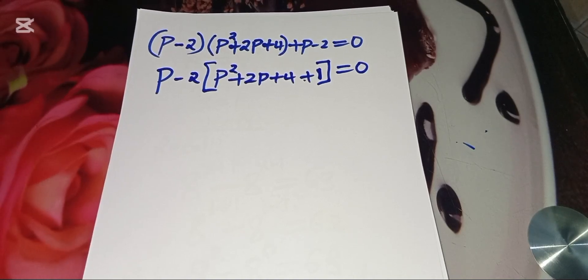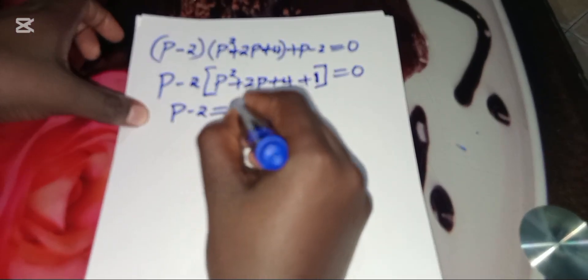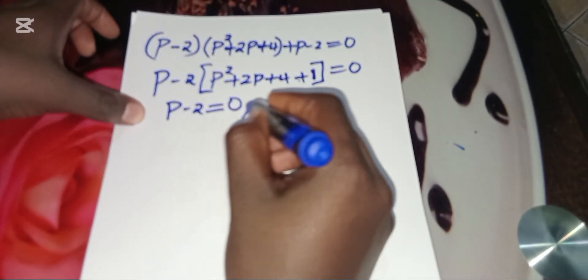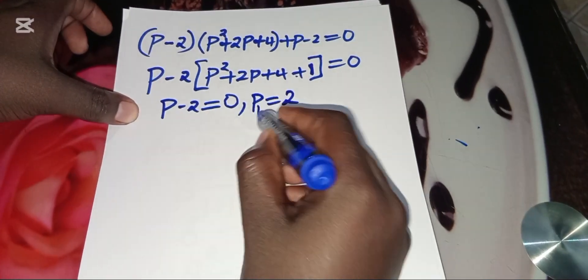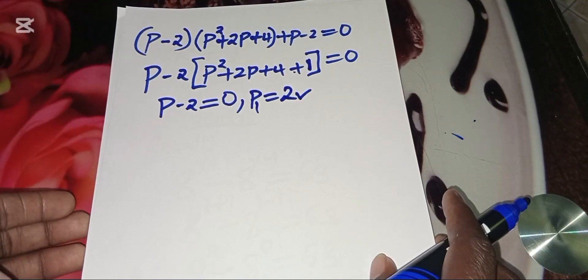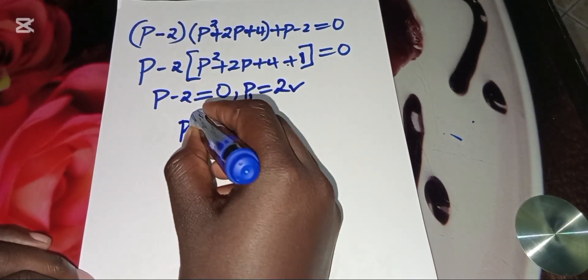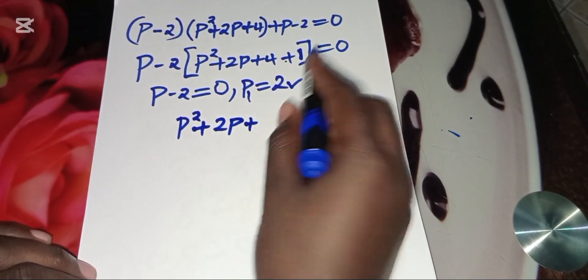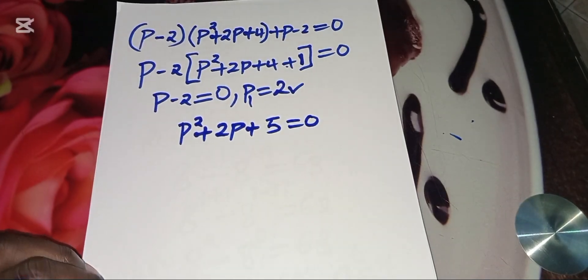Now P minus 2 is common, so we factor out P minus 2. Inside the bracket we have P squared plus 2P plus 4 plus 1, equal to 0. From here P minus 2 equals 0, giving us the first value P1 equal to 2. Now let's proceed to solve the second part, which is P squared plus 2P plus 4 plus 1, that is 5, equal to 0.